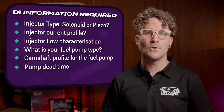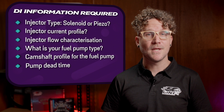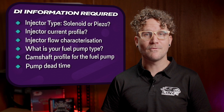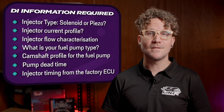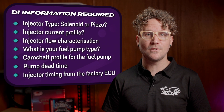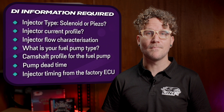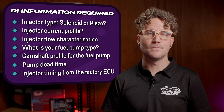Measuring a direct injection fuel pump dead time is a complex task. The easiest way to get this information is from the factory ECU. If that is not possible, you will need to find a way to reverse engineer it from the fuel pump. If you can get this information from your car's factory ECU, it will streamline your tuning time, though you can work this out on the fly as you tune.